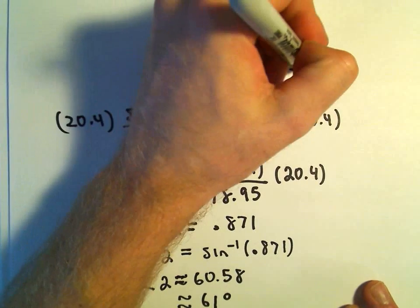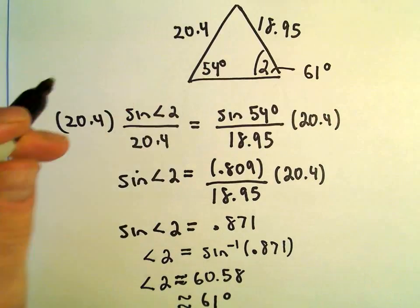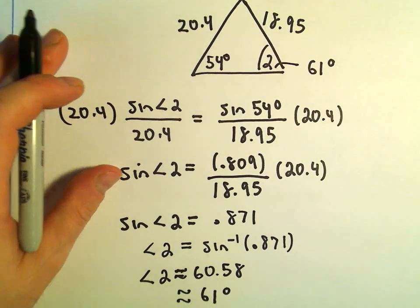And we'll round that off to 61 degrees. So we now know that the measure of angle 2 is just going to be 61 degrees.